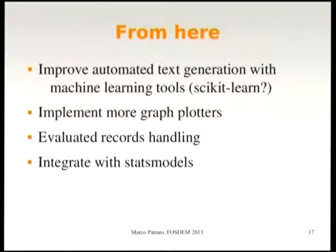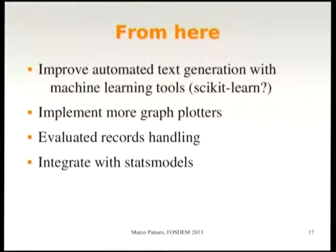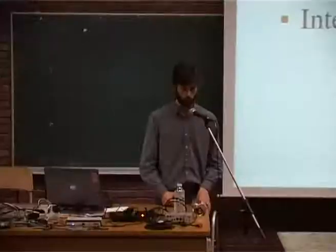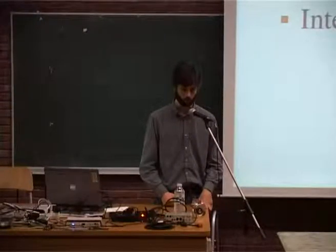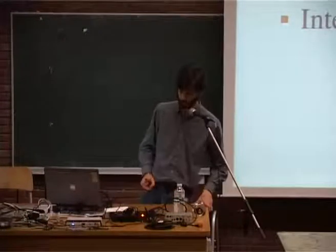What I want to do from here: first, the automated text generator should be implemented, maybe using scikit-learn or some other machine learning tools. More plotters. Evaluated record handling, which is quite the same thing as evaluated columns but should work on records instead of columns. And maybe integrated with a model to let users define statistical models to apply to the data.